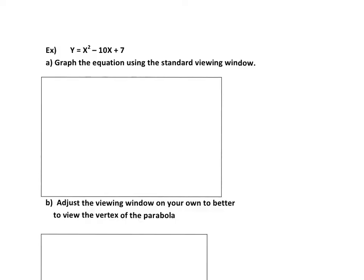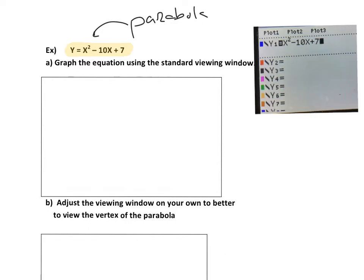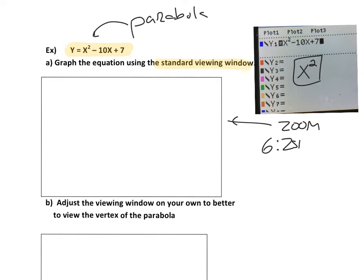Now I'd like you to graph the equation y equals x squared minus 10x plus 7. This is going to be a parabola because x is squared. Press the Y equals button, clear out the other equation, and type in this equation. Use the X button and then the x-squared button to enter x squared, then the rest of the equation. I want to first graph it in the standard viewing window — press zoom and go down to number six for zoom standard.